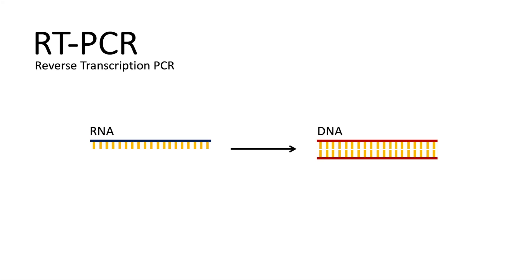So in a nutshell, reverse transcription PCR can synthesize DNA fragments out of an RNA template. And with PCR and applying different cycles, we can generate high quantities of the DNA so that it is possible to sequence the genome.